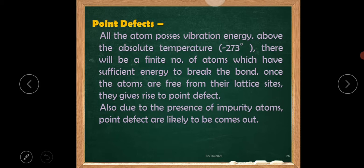Point defects. All the atoms possess vibration energy above the absolute temperature, minus 273 degrees Celsius. There will be a finite number of atoms which have sufficient energy to break the bond. Once the atoms are free from their lattice sites, they give rise to point defect. Also, due to the presence of impurity atoms, point defects are likely to form.